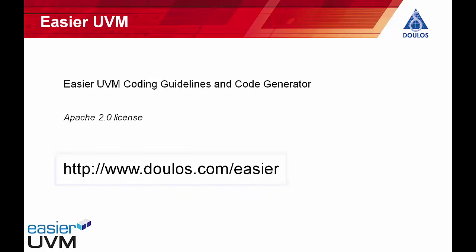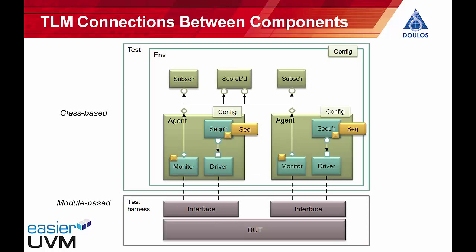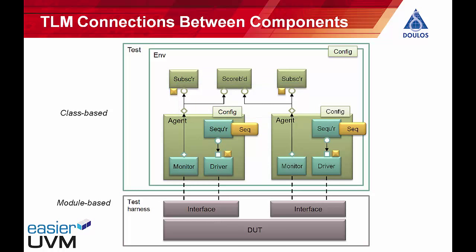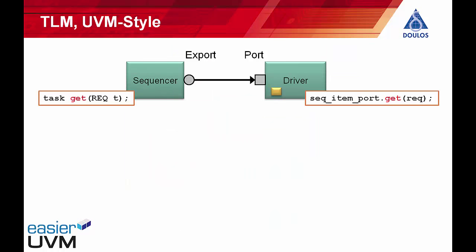The coding guidelines and the code generator are available under an Apache 2.0 license. UVM uses TLM connections, or transaction level modeling connections, between all of the class-based components in the verification environment. On this diagram you can see transaction level connections between sequencer and driver, and connections used to distribute transactions from the agent around other components for analysis — meaning coverage collection and checking. During this tutorial I'll show you code from the code generator and explain all the main concepts.